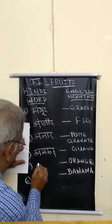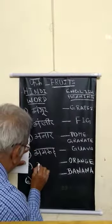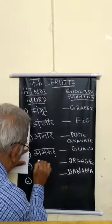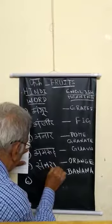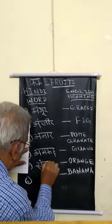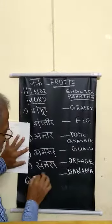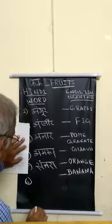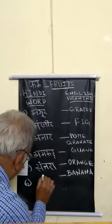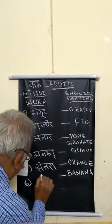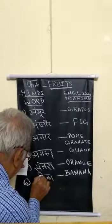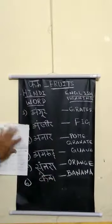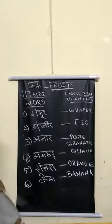Next is Santara. Santara means orange. Next is Kela. Kela means banana.